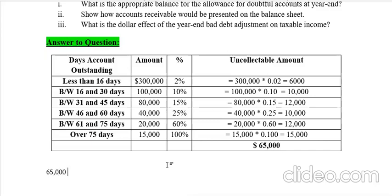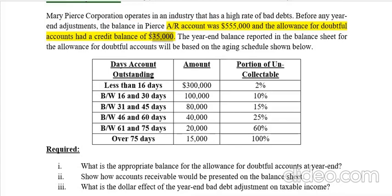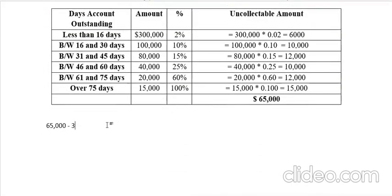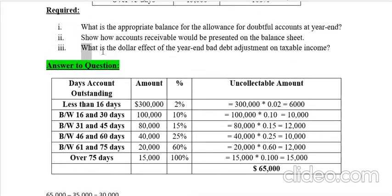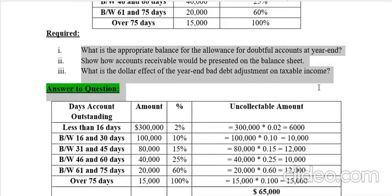To find the adjustment needed, we take the new balance minus the old balance: $65,000 minus $35,000 equals $30,000. This means we need an adjustment of only $30,000. This $30,000 will decrease the taxable income of the company after the bad debt adjustment. Those are the three answers to this numerical. Thank you very much — stay safe.